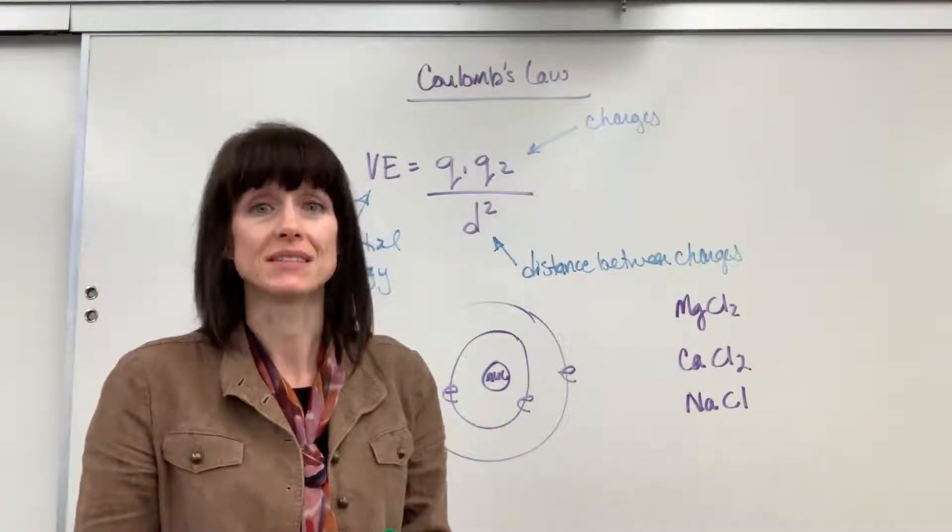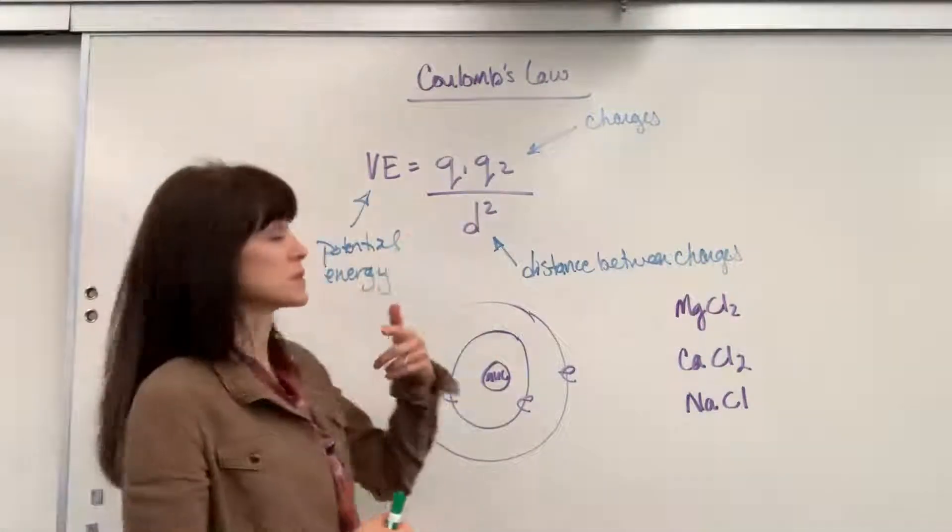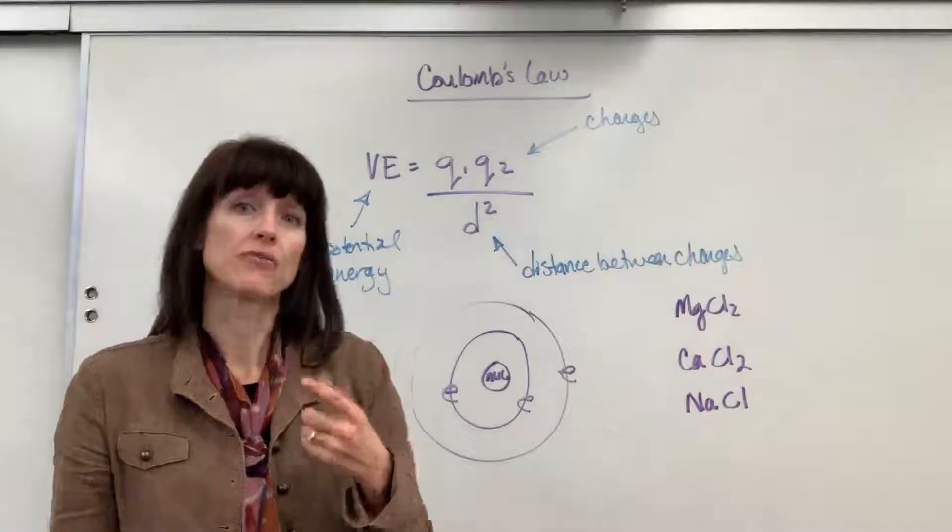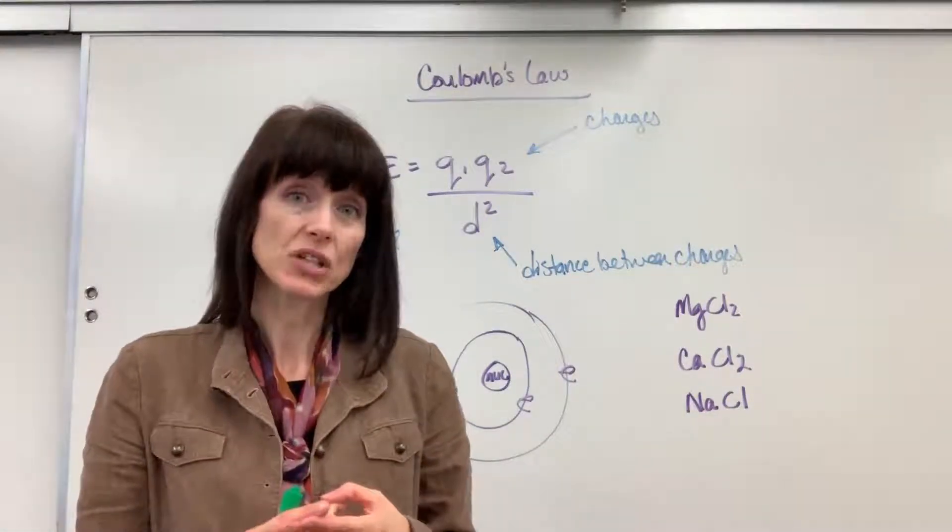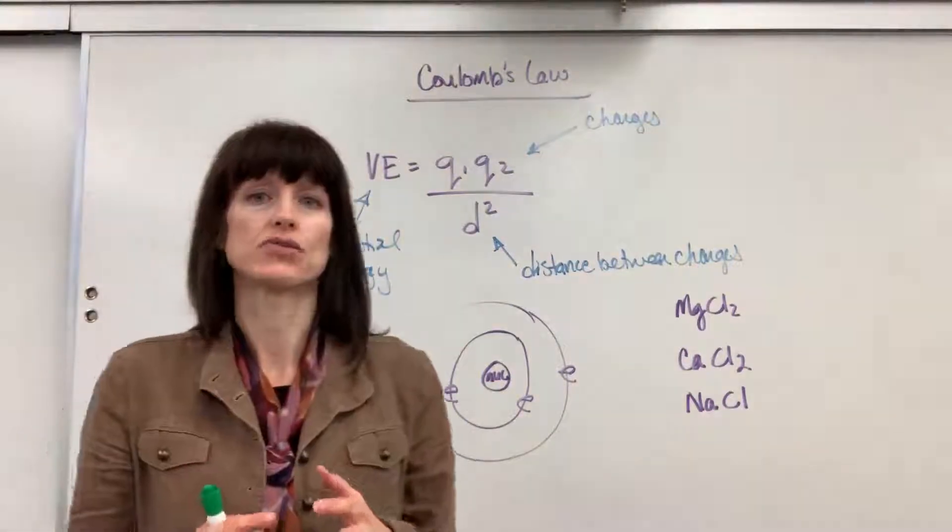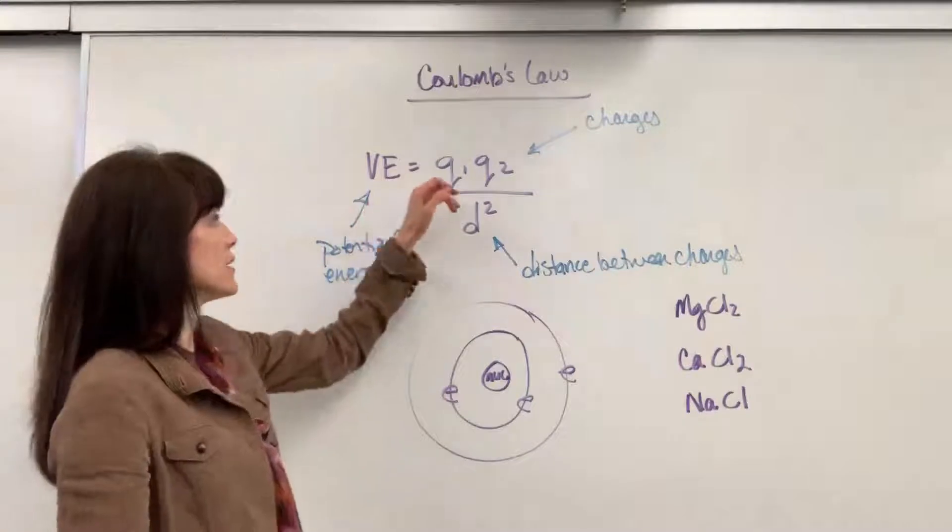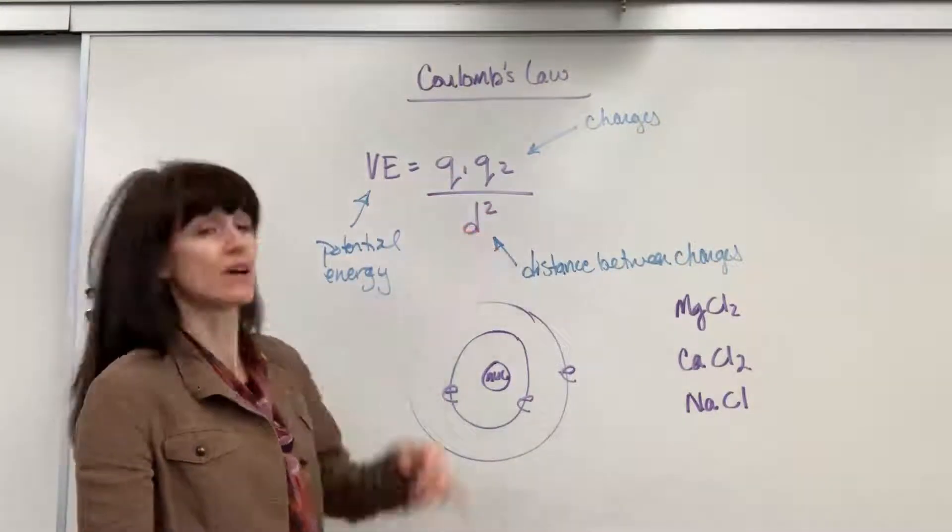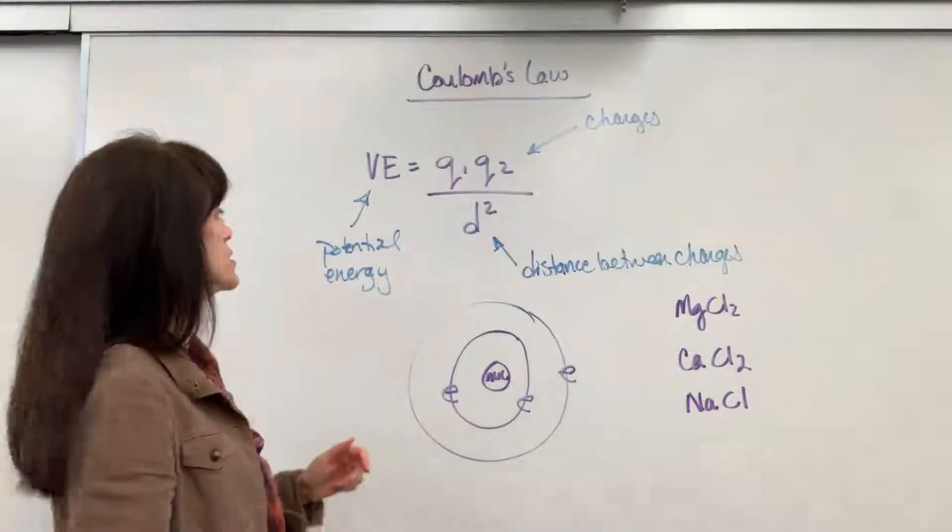And Coulomb's Law is essential for that, especially for atomic structure. Now we can use Coulomb's Law if we're looking at photoelectron spectroscopy, ionization energies, lattice energy, anything that deals with charges and distance. So let me show you Coulomb's Law. Here it is. VE equals Q sub 1 times Q sub 2 divided by d squared. Now I've labeled all of this for you, and I want to explain it to you.